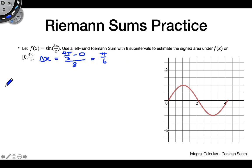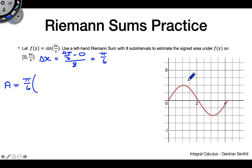Now when we calculate our area, we can factor out the π/6 and just sum together the different values of f(x) that we're interested in. So we'll factor out π/6 and then put all the relevant heights inside the parentheses.